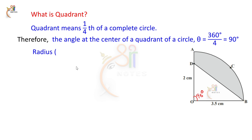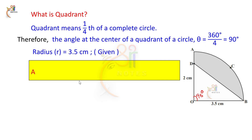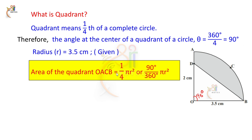The radius is 3.5 centimeters. The area of quadrant OACB equals 1 by 4 into π r squared, since a quadrant is 1 by 4th of a full circle and a semicircle is 1 by 2.